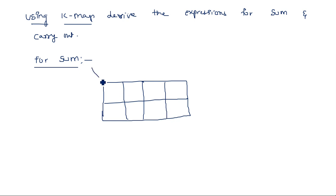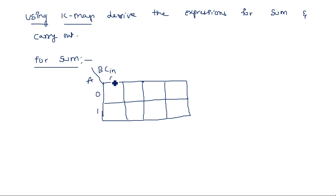We already know from the previous unit on minimization of Boolean expressions how to simplify three-variable, two-variable, and four-variable K-maps. We will use that knowledge here. The K-map has A and B on one axis and Cin on the other, using Gray code representation: 00, 01, 11, 10.